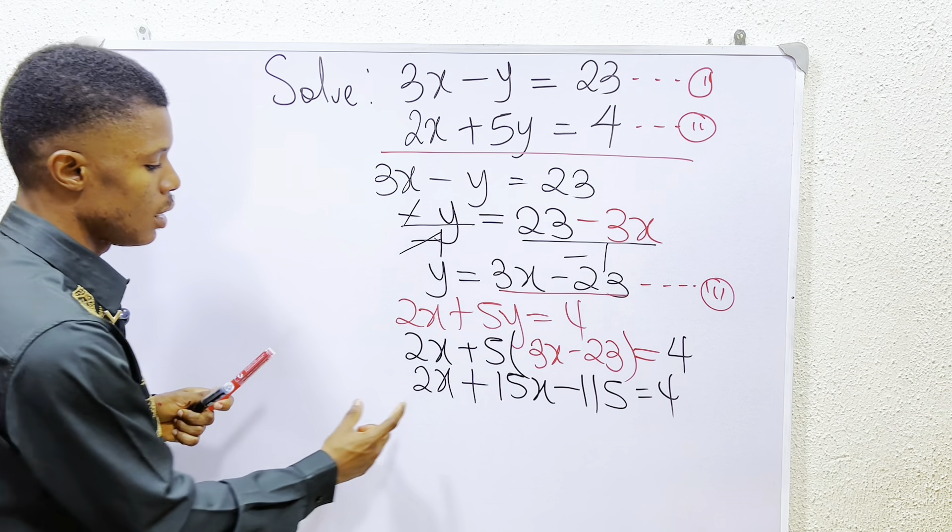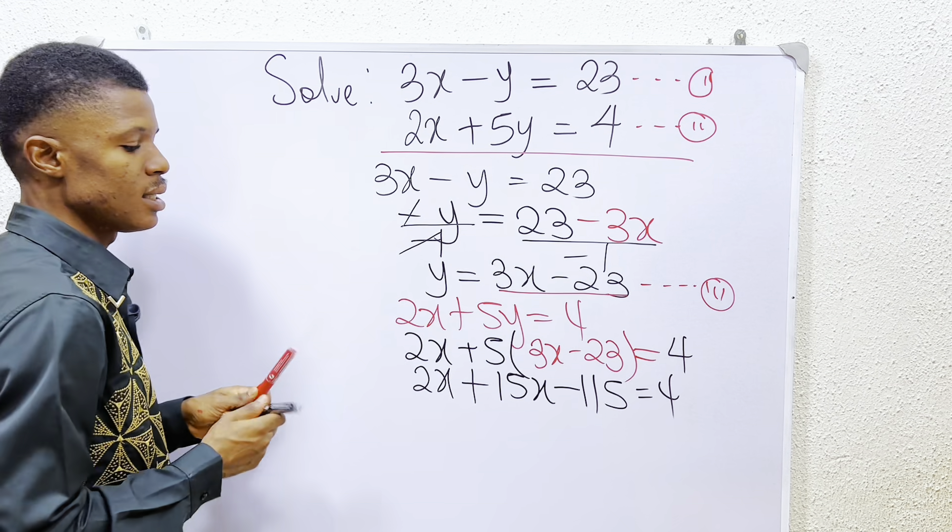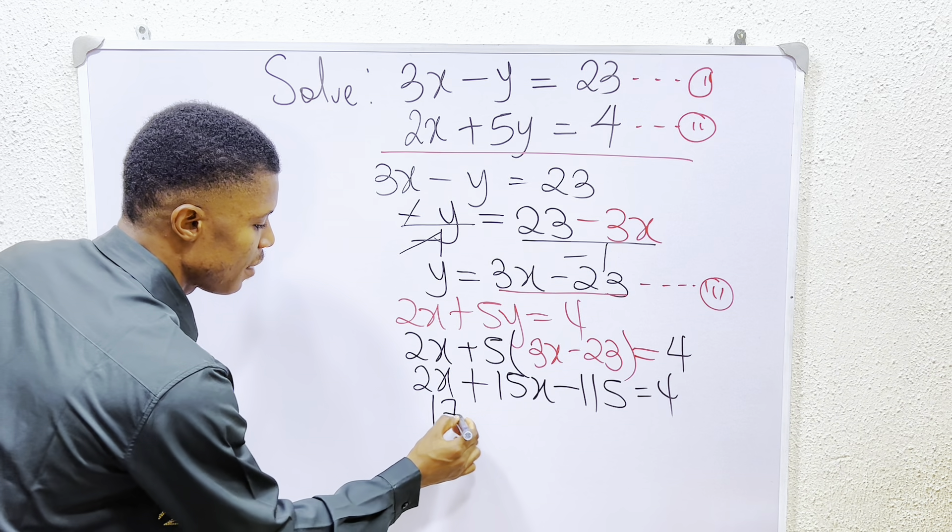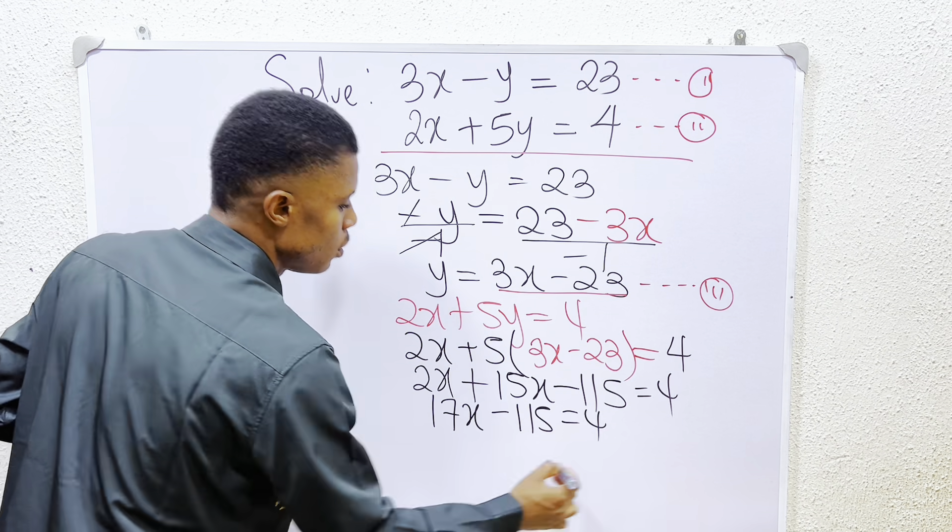The next thing we do is that we notice that 15x plus 2x is basically 17x. So we have it as 17x minus 115 is equals to 4.